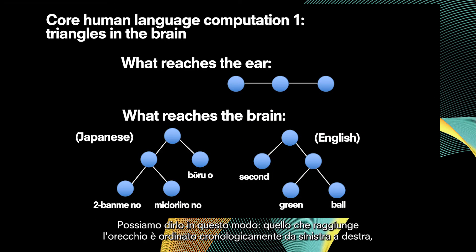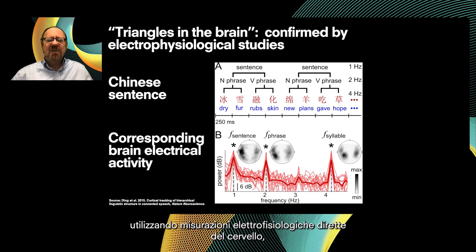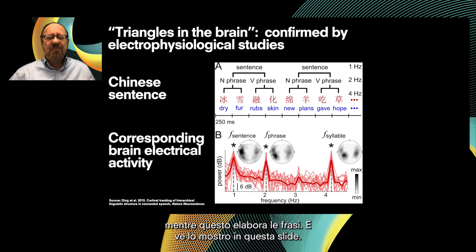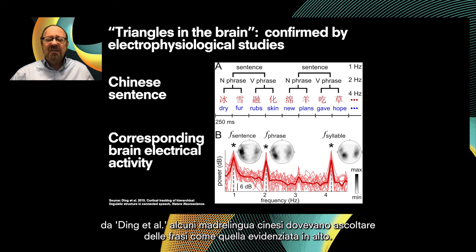So that's the first core computation of human language: what reaches the ear is ordered in time from left to right, but what reaches the mind or brain is unordered — it's actually hierarchical. We can make these internal triangles in the brain visible using direct electrophysiological measurements of the brain as it processes sentences, as I show on this slide.